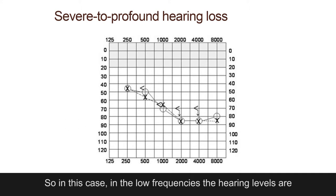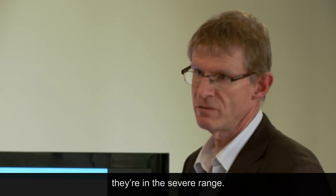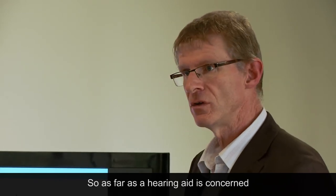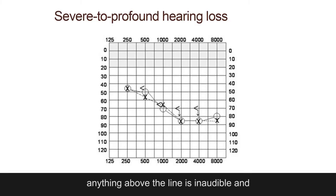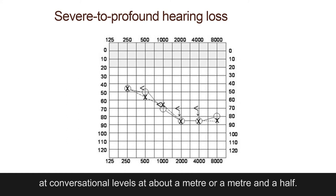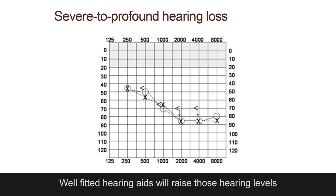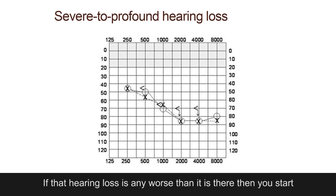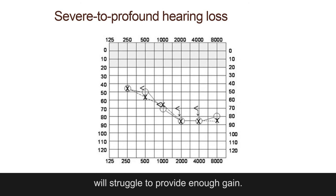So in this case, in the low frequencies, the hearing levels are in the moderate range, and in the high frequencies, they're in the severe range. Anything above the line is inaudible, and anything below the line is audible to the person. So without a hearing aid, speech is inaudible at conversational levels at about a metre or a metre and a half. Well-fitted hearing aids will raise those hearing levels to the point where speech sounds are audible. If that hearing loss is any worse, then you start to consider a cochlear implant, because a hearing aid will struggle to provide enough gain.